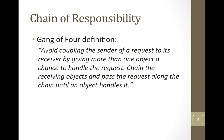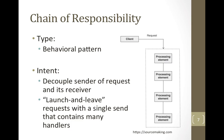That's the basics of Chain of Responsibility. The Gang of Four official definition is: avoid coupling the sender of a request to its receiver by giving more than one object a chance to handle the request. Chain the receiving objects and pass the request along the chain until an object handles it. A client makes a request, and a bunch of processing elements can handle it — the request goes to the first element and continues moving down until it can be taken care of.